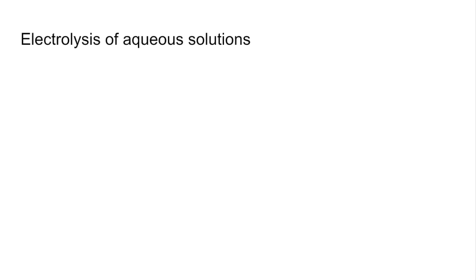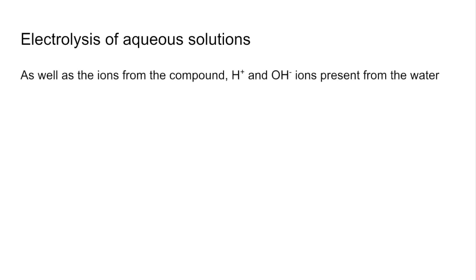Now let's move on to the electrolysis of aqueous solutions. What we have to bear in mind is that as well as the ions from the ionic compound, we also have H+ and OH minus ions from the water. There's a set of rules to follow. For the anode, remember the negative ions go there — so now we have the hydroxide ion from the water competing with the negative non-metal ion.